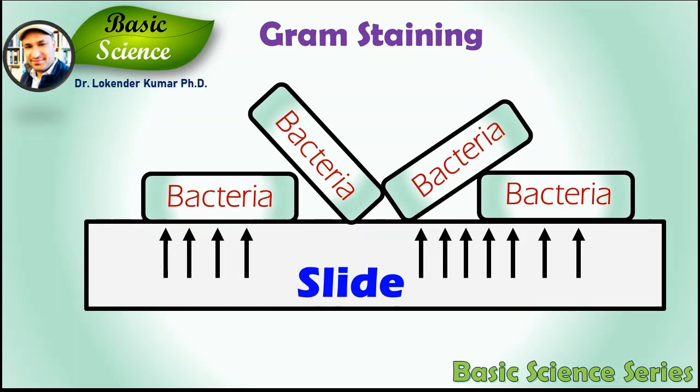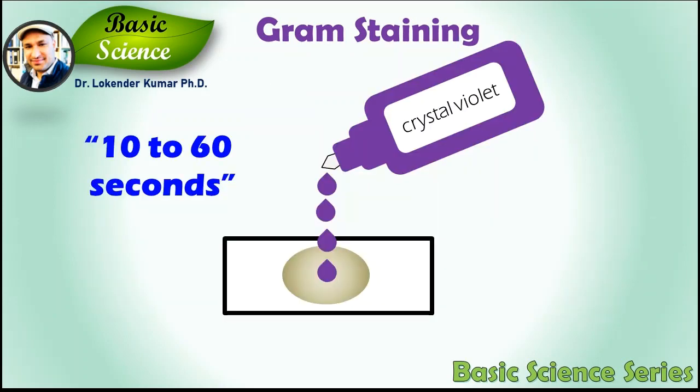The next step is the staining step. Add crystal violet stain over the fixed culture and let it stand for 10 to 60 seconds for a thin smear slide. Pour off the stain and gently rinse the excess stain with a stream of water from a plastic water bottle. Note that the objective of this step is to wash off the stain, not the smear.